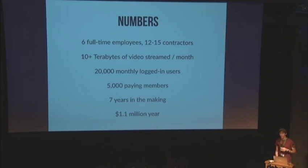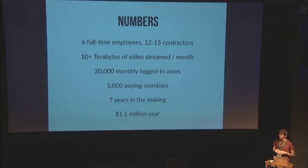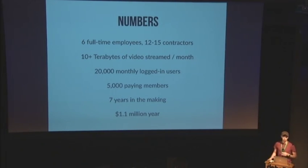We've got approximately 5,000 paying members through our citizen membership — it tends to fluctuate, growing slowly. After seven years in the making, we're doing just over a million dollars a year in total revenue, growing about 30% year to year. Our very first year, I think we did about $500. When we first started, we had no business model. Everything up until this point has been a completely organic process — never have we had a dedicated business plan.